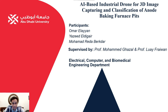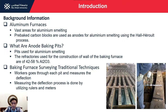Hello and welcome to our project, which is about the development of an AI-based industrial drone for the purpose of 3D modeling, detection, and classification of anode baking furnace pits. In the context of aluminum production, electrolysis is used to extract the metal from its impurities. During the electrolysis process, carbon anodes are used, and these anodes must be prepared in furnaces that have heating pits — and this is the scope of our project.